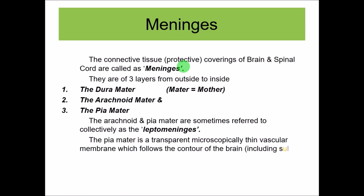The pia mater is the innermost layer totally covering and adherent to the brain. It is a transparent, microscopically very thin vascular membrane which follows the contour of the brain - the cerebral cortex including sulci, gyri, and fissures - invaginating along with every indentation of the cortical surface. It cannot be stripped without damaging the cerebral cortex tissue itself. Even though it covers the cerebral cortex, you can still see the cortex because the pia mater is transparent.